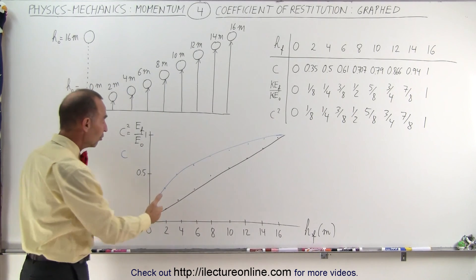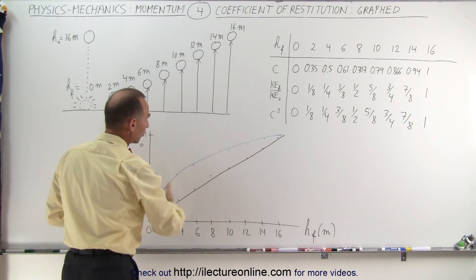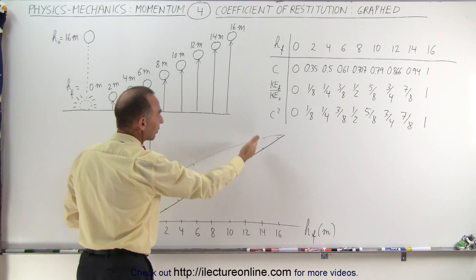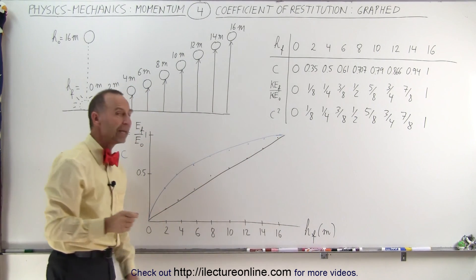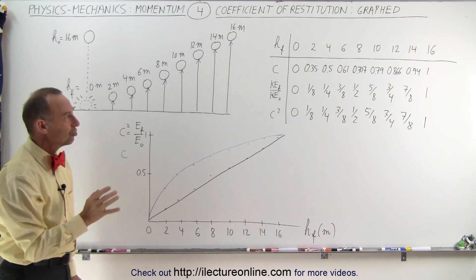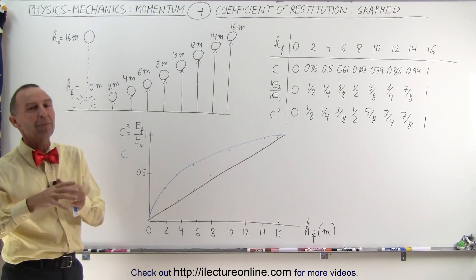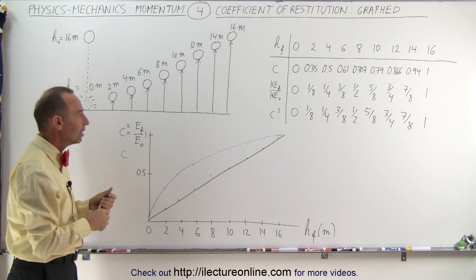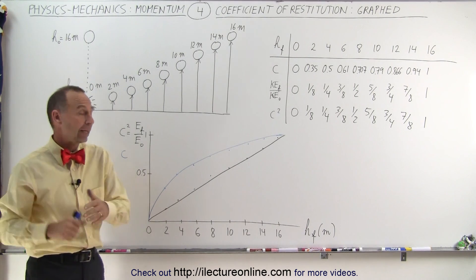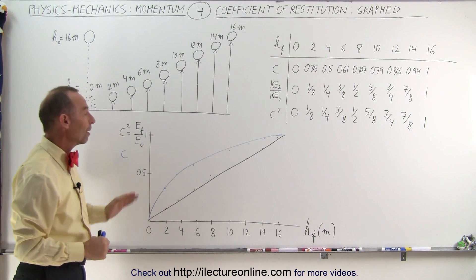But in between, notice that the coefficient of restitution does give you a different value. It's not that linear relationship. It does give you an indication as to roughly how much energy is lost and how much energy is kept in the collision. But it's not a linear relationship.